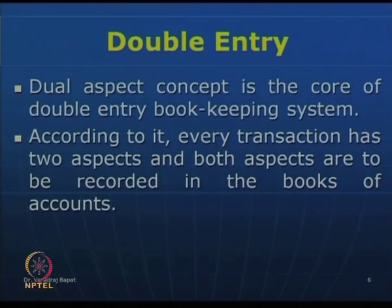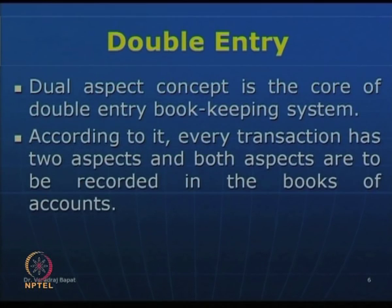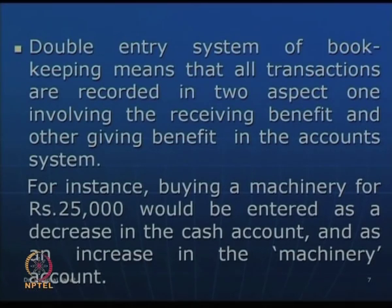Now let us go to another concept — the double entry system of accounting. Every transaction has two effects, and both aspects of the transaction need to be recorded. For example, if you buy machinery paying cash of 25,000, the machinery account increases while your cash or bank balance decreases. So machinery has gone up while cash has gone down. Every transaction will have two effects which will exactly match — that is the understanding under the double entry system.